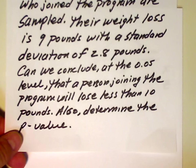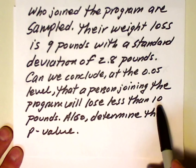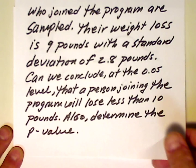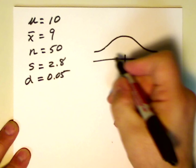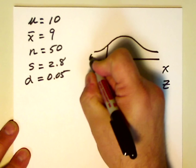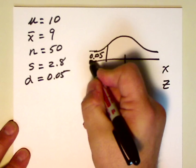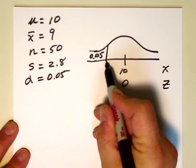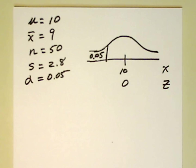Let's go back to the question. The question is: can we conclude at the 5% level that a person joining the program will lose less than 10 pounds? Well, that's this side we're working with — it's less than. So we have a one-tail test, and we know that we have 0.05 in the tail. We don't know what the x-value associated with 0.05 is, but we are going to find the critical value associated with it.